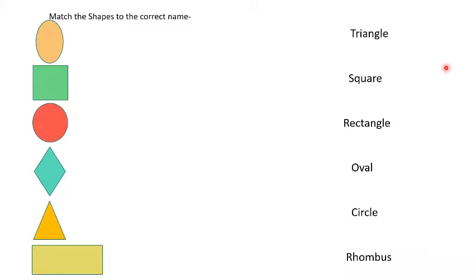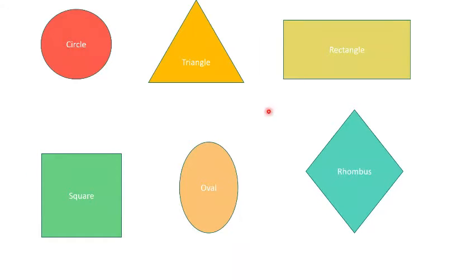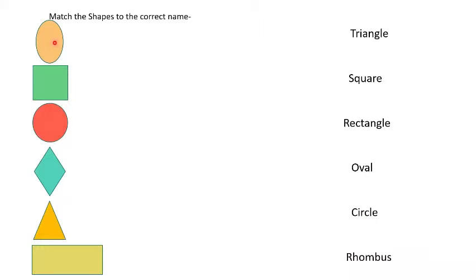This is our classwork and E will start with the first three then I'll do the last three. What we have to do is match the shapes to the correct name. We have all of our shapes here that we have on the previous page and we have all of them labeled. Basically we have to match them to which shape they are.